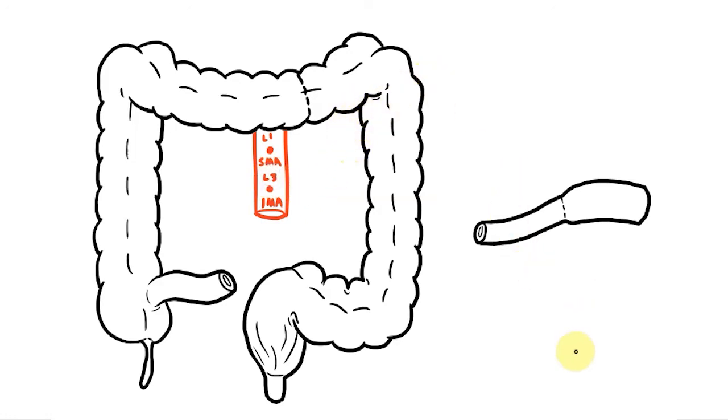Let's look at these vessels in more detail. The first branch of the superior mesenteric I'd like to draw is the ileocolic artery. This heads diagonally down towards the meeting of the small and large intestines.